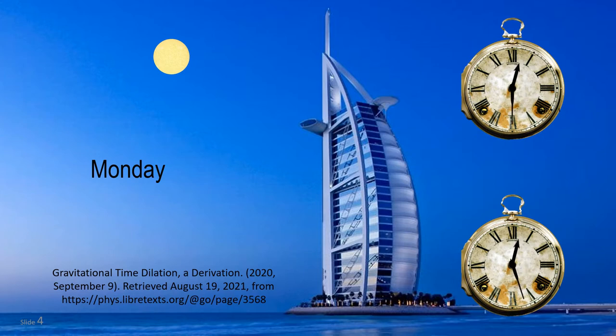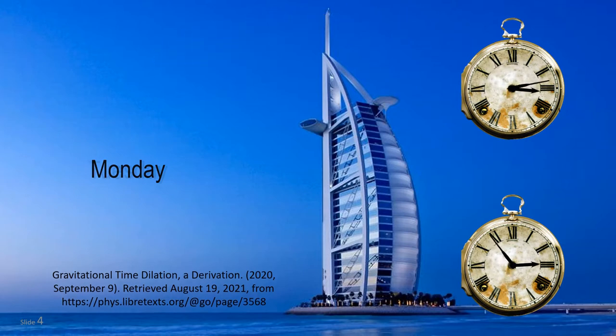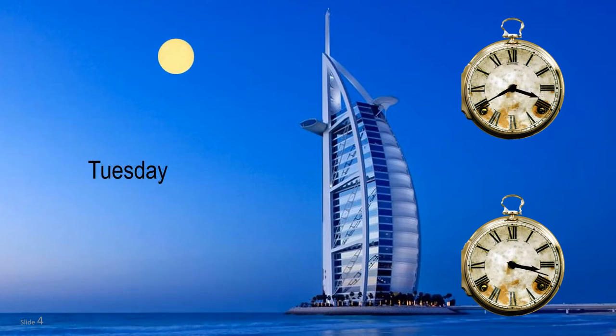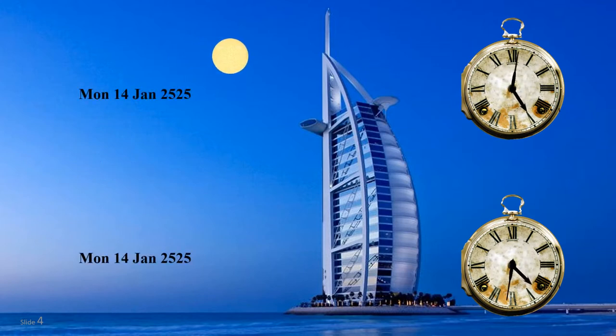We know from general relativity that gravitational time dilation means that clocks would be going faster at the top of a building relative to the bottom. That also means you get more time between Monday and Tuesday in the penthouse during the day than you do in the basement. The day is universal to both locations and over millions of years their calendars will never go out of sync.